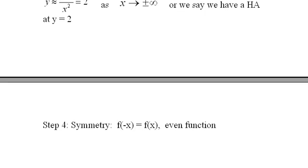Step 4 is symmetry. We put in negative x, and you're supposed to know how to find this yourself, as I suggested in the first rational function video. We find that f of negative x equals f of x, therefore we have an even function.